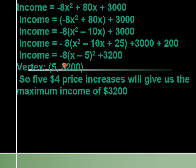Our vertex is (5, 3200). Remember, x was the number of price increases, so 5 increases of $4 each will give us the maximum income of $3,200.